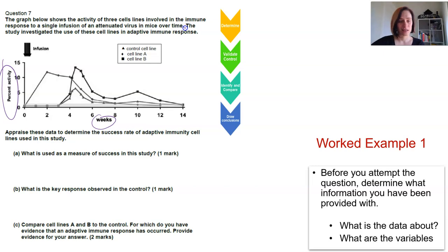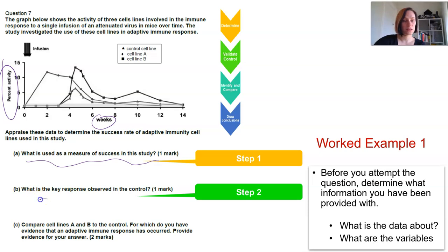So then going through that process, we need to identify where this is, and in some cases this will be scaffolded. In other cases it won't be. Here it's saying, what is the measure of success used? Well, that kind of identified it for us. Then it's saying we need to validate the control, so what's the key response observed in the control? It's prompting you again. Then that last question says compare cell lines A and B to the control. So you're doing that identify and compare and you're drawing some conclusions.